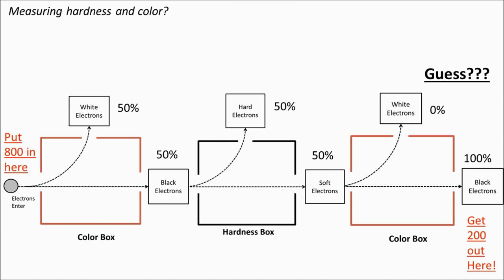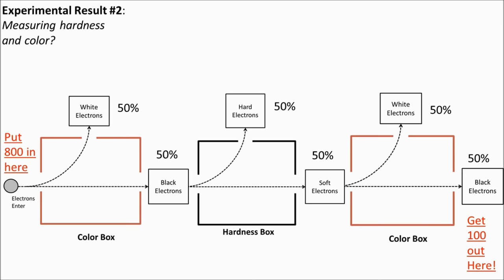Now here's where it gets interesting. What if we try to measure both the hardness and the color? I send 800 electrons through a color box — about 400 will be black. I take those black electrons and send them through a hardness box, giving 50% hard and 50% soft. Then I take those soft electrons and send them back through a color box. You'd guess they're still black, right? You'd expect around 200 electrons out of the black hole. But when we actually do the experiment, we only get 100 out of the black hole — and the other 100 come out of the white hole.